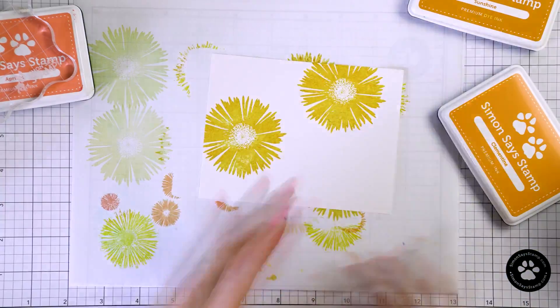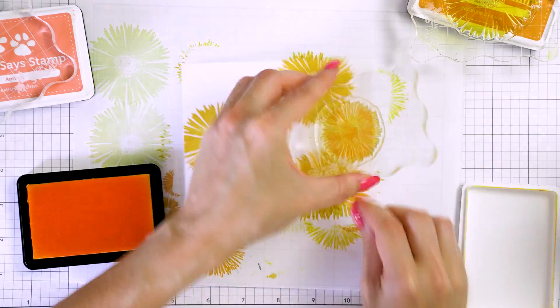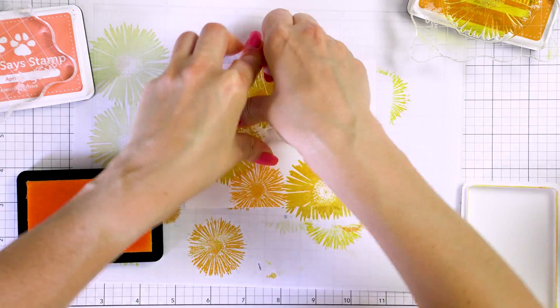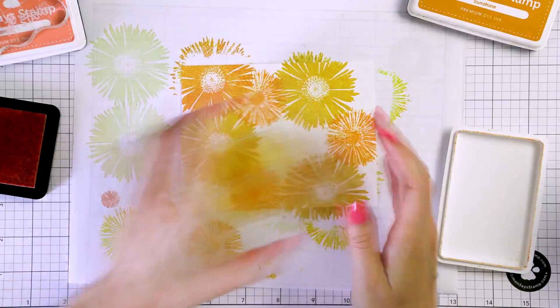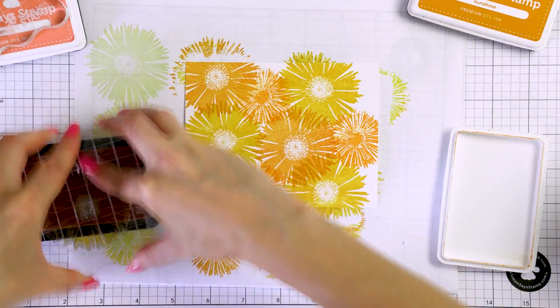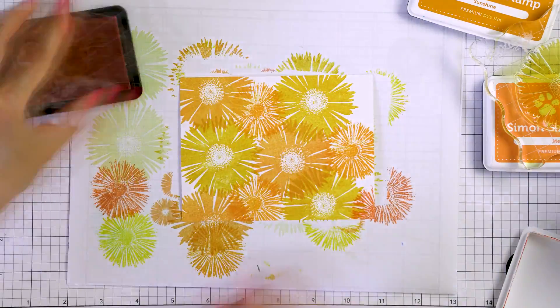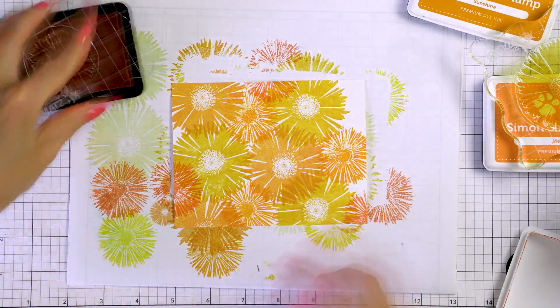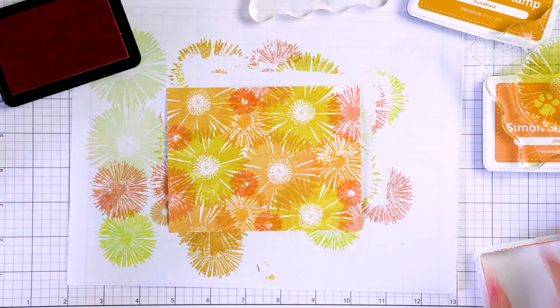I'm going to speed up this part of the video as I'm basically doing the same thing. I'm stamping the same pattern but using different ink colors. You can go as light or as dark as you want. You don't have to go monochromatic. You can mix various colors. But I think that the monochromatic patterns look the best. There is just something peaceful and calming about them.